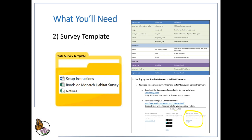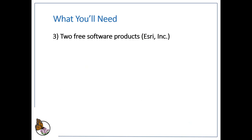Secondarily you'll need the survey template — this is the easy part because we're going to give this to you. Eventually you'll be able to download it from our website; in the interim we'll serve it to you directly through email. You'll download a zipped survey template file containing three files: step-by-step screenshot instructions on how to set this all up, the core roadside monarch habitat survey template which is an Excel file, and an associated CSV file.